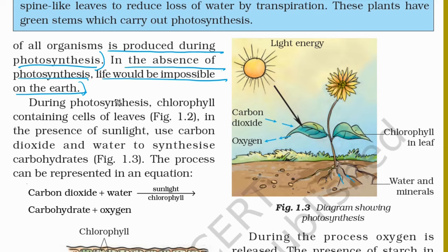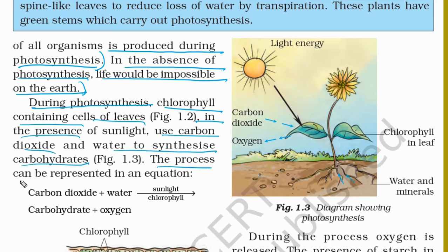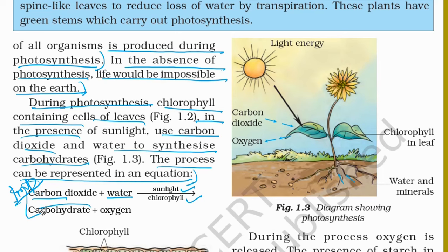During photosynthesis, chlorophyll-containing cells of leaves, in the presence of sunlight, use carbon dioxide and water to synthesize carbohydrates. The equation is: carbon dioxide + water, with sunlight and chlorophyll, produce carbohydrates and oxygen. This equation is very important — you can be asked to show the process of photosynthesis using an equation. Carbohydrates are also called starch.